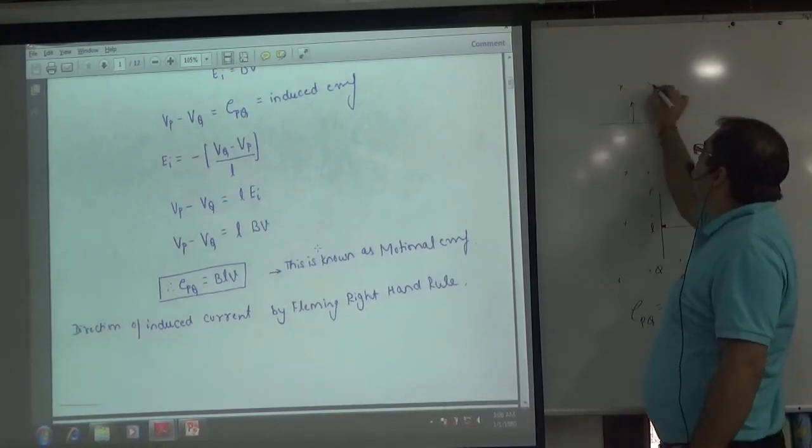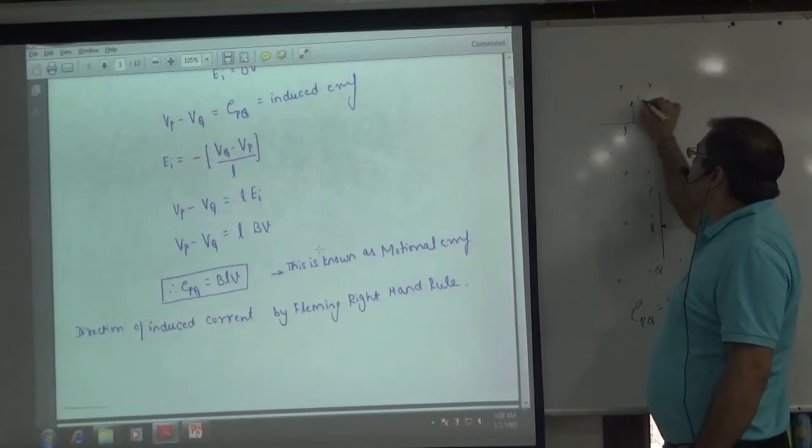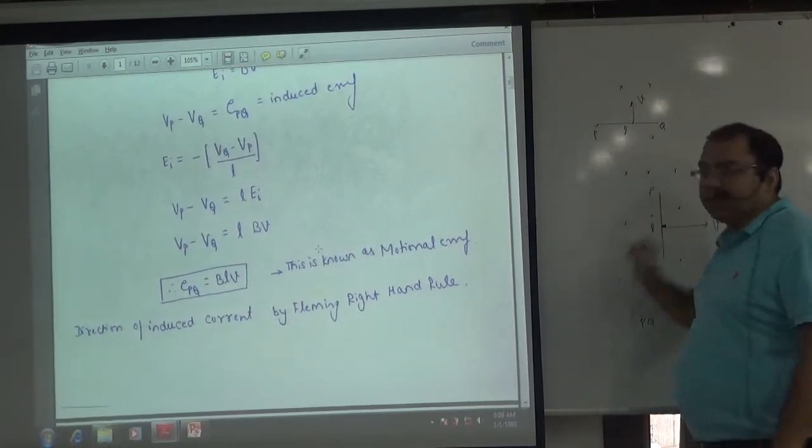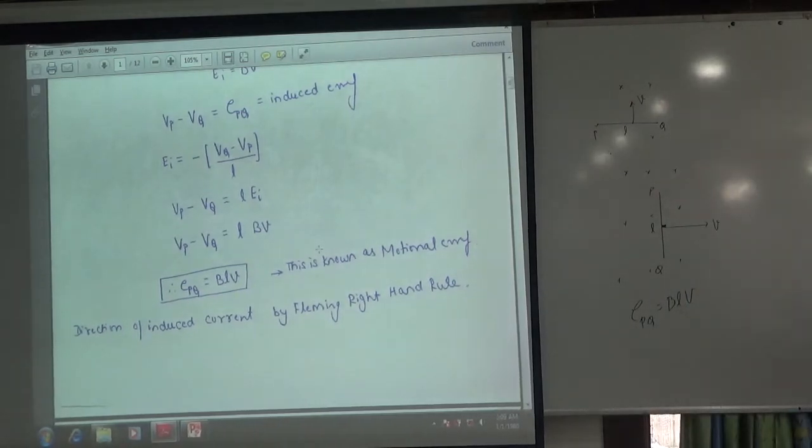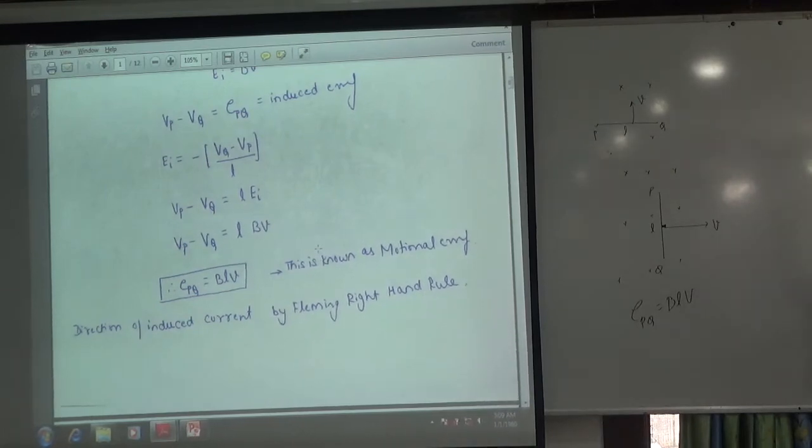These two points will get you. If the velocity vector is up, one rod moves up, magnetic field is present, L length is present, then EMF will get you in these two points P and Q. The velocity vector perpendicular line, the two points will get you.